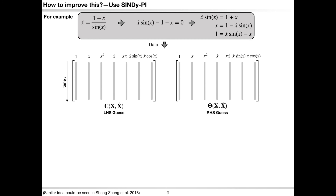Suppose we have a rational dynamics: x-dot equals 1 plus x divided by sin x. Following the idea of implicit SINDy, we could transfer this rational dynamics into an implicit form. It is easy to see that this implicit equation has three different non-implicit forms — in other words, you could take out one of the nonlinear bases and make the implicit equation non-implicit.